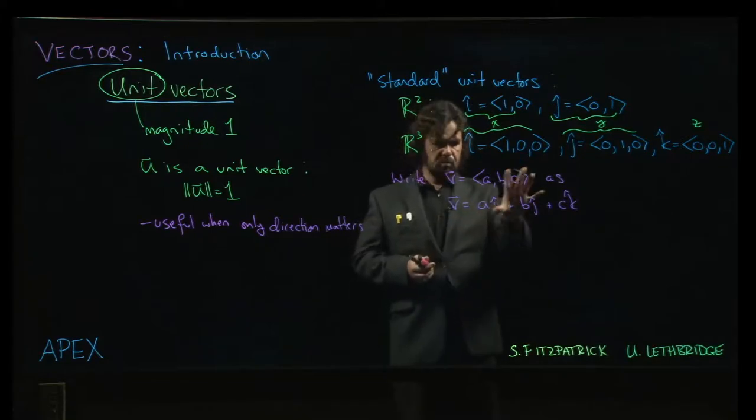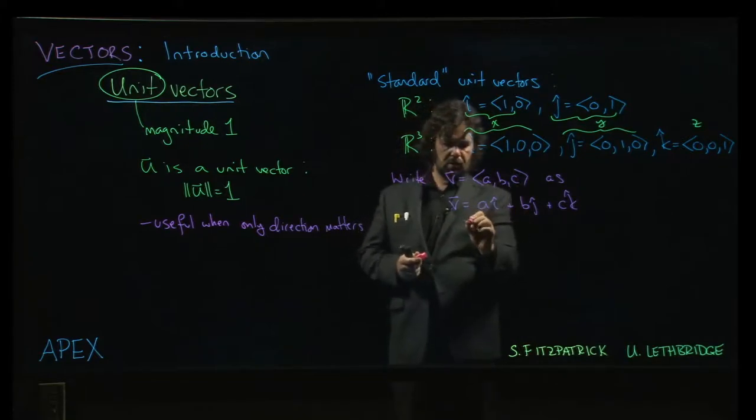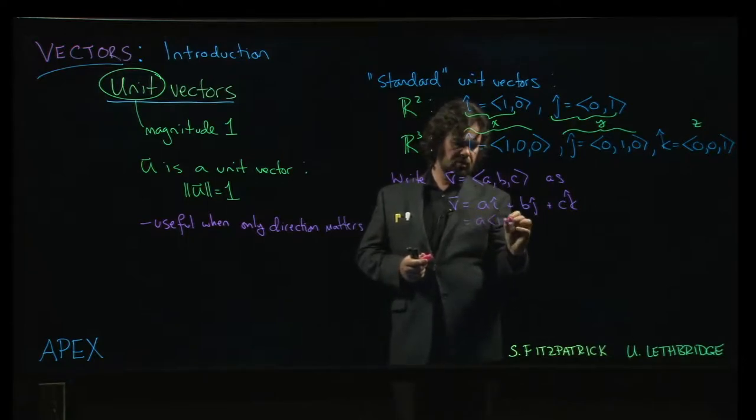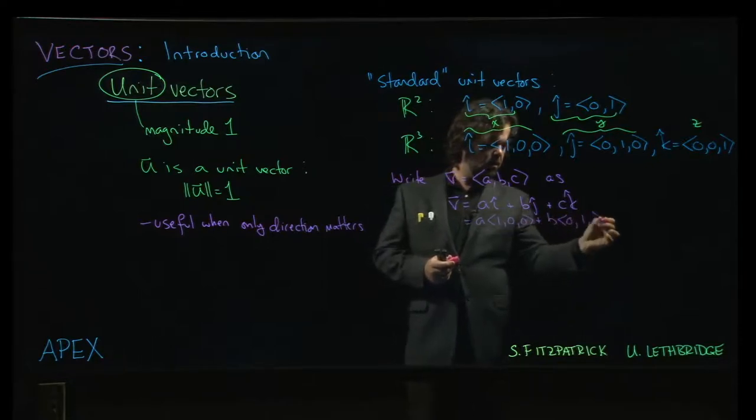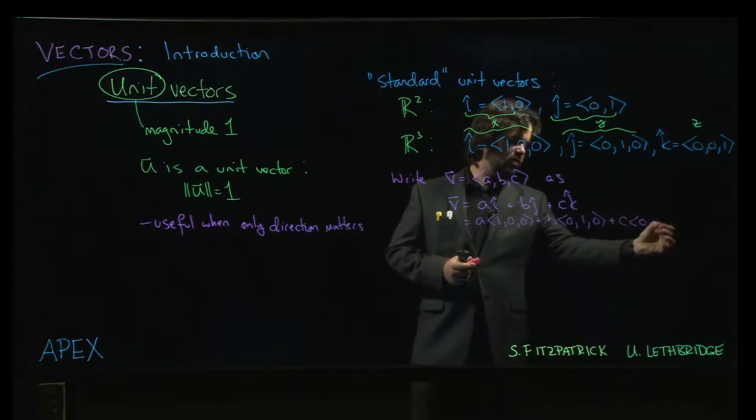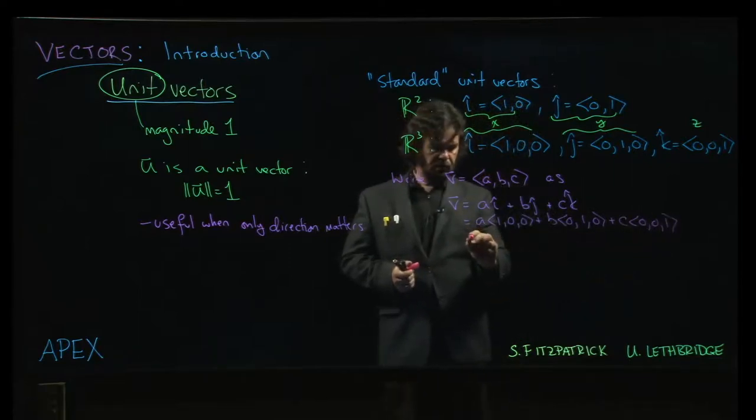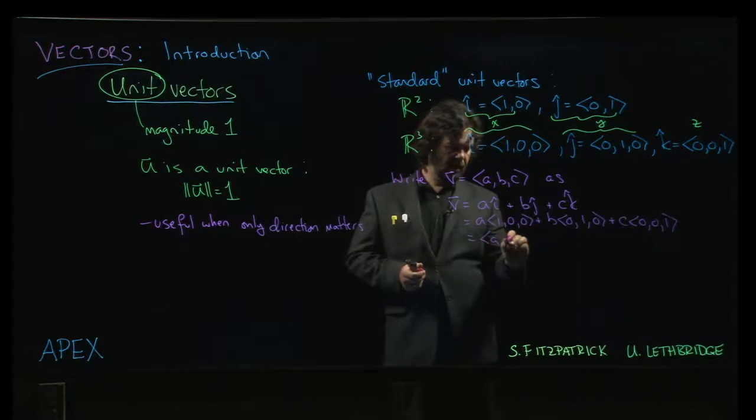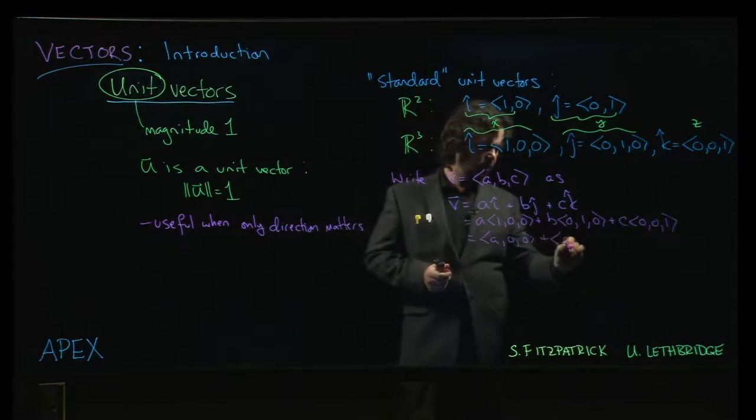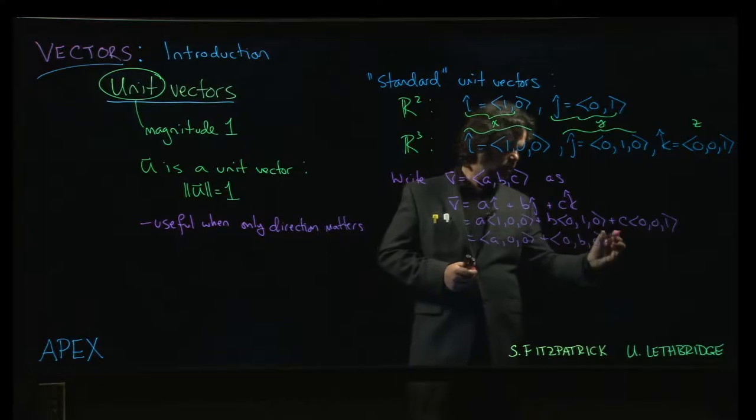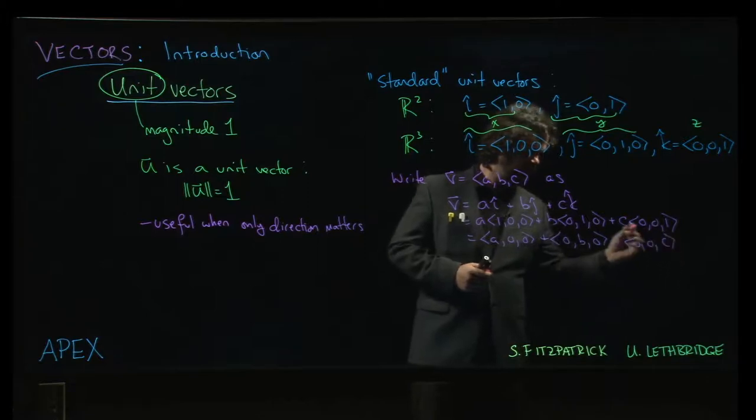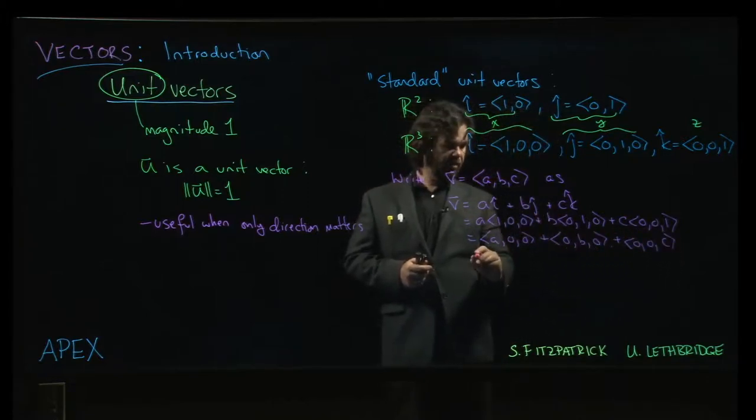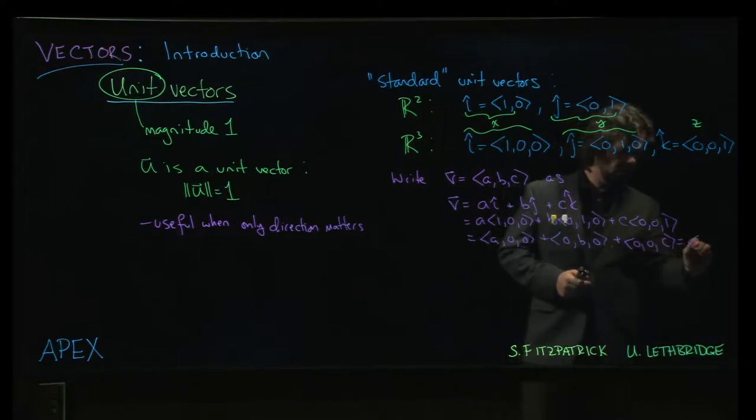To see that these are indeed equivalent, well, just substitute in. Let's do the three-dimensional version: a(1, 0, 0) plus b(0, 1, 0) plus c(0, 0, 1). Use the rule for scalar multiplication. This becomes (a, 0, 0) plus (0, b, 0) plus (0, 0, c). And then use the rule for addition to combine these together. And you are going to get (a, b, c) as expected.